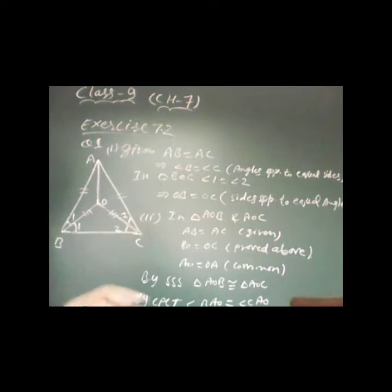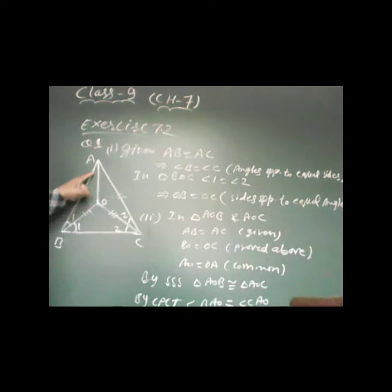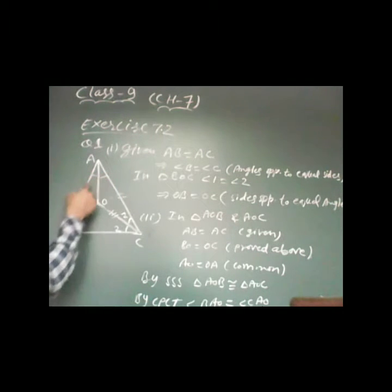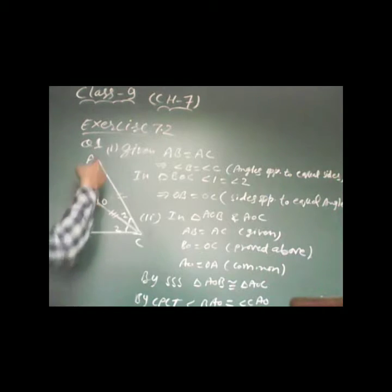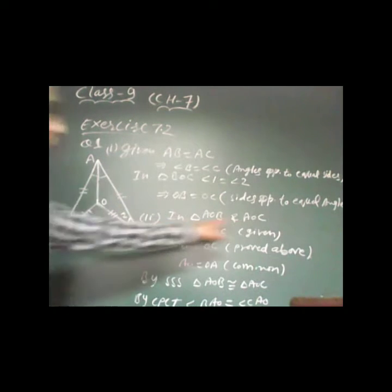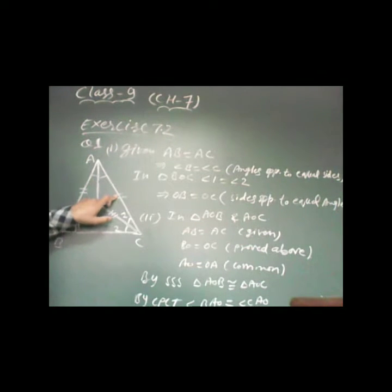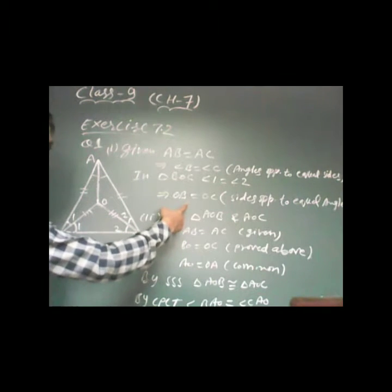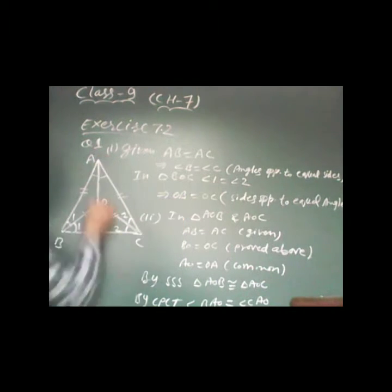In the second part, we need to prove AO bisects angle A — meaning we need to prove the two angles at A are equal. We do this by proving congruence of triangles ABO and ACO. In triangle AOB and AOC: AB is equal to AC (given), OB is equal to OC (just proved), and AO is common.